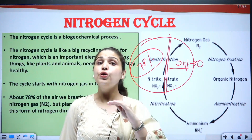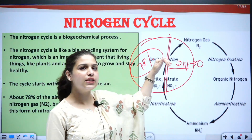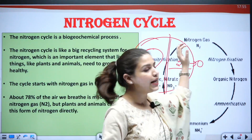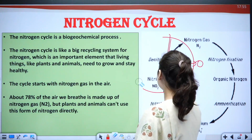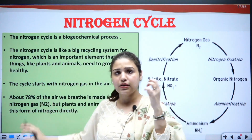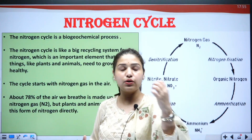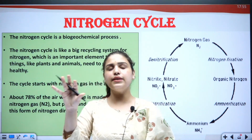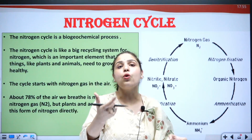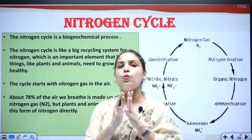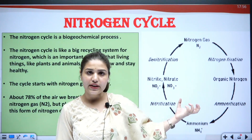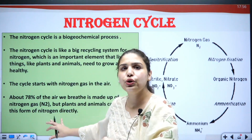This nitrogen needs to undergo certain processes so that its form can be changed and it can be consumed by plants and animals. We will discuss those processes — how nitrogen is fixed, how it is made usable by plants and animals, and how it is transferred back to the atmosphere. There are certain nitrogen-fixing bacteria through which this conversion happens.